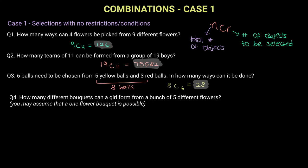Now this question says how many different bouquets can a girl form from a bunch of five different flowers? You may assume that a one flower bouquet is possible. Notice that in this question they have not specified how many flowers need to be in a bouquet so there is no way of just choosing a certain number of flowers from five. So we need to list down all possible cases, all possible different bouquets that we can form from five flowers.